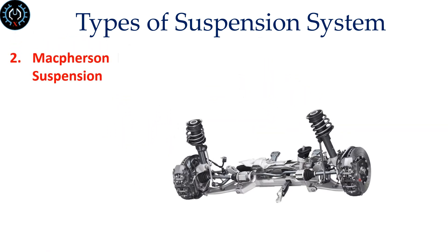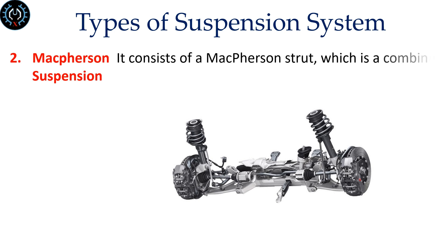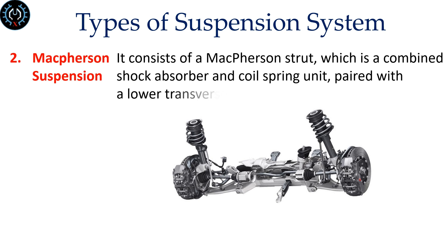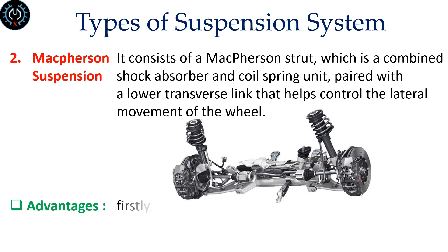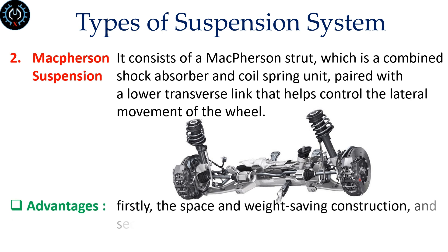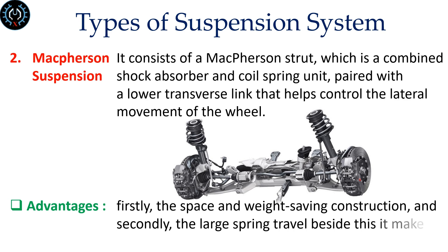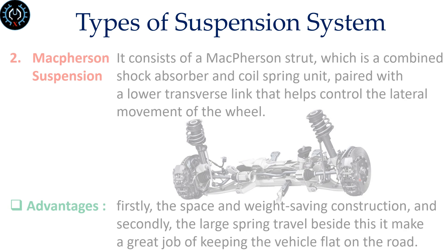McPherson Suspension consists of a McPherson strut, which is a combined shock absorber and coil spring unit, paired with a lower transverse link that helps control the lateral movement of the wheel. Its advantages include space and weight-saving construction, and large spring travel, which does a great job of keeping the vehicle flat on the road.